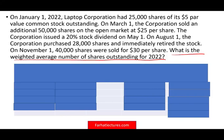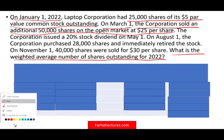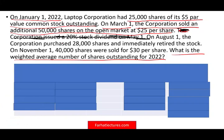We're going to work two versions of this problem, so I want to make sure you are comfortable with both. On January 1st, 2022, Laptop Corporation had 25,000 shares of its five-dollar par value common stock outstanding. On March 1st, which is two months later, the corporation sold an additional 50,000 shares in the open market at $25 per share. For this first version, I'm going to leave out the 20% stock dividend — we'll work that into the second version.